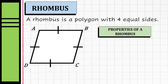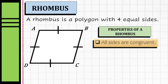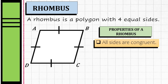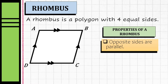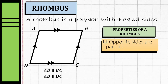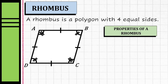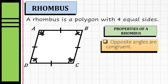Let's identify the properties of a rhombus. We know that all sides of a rhombus are congruent. Next, the opposite sides are parallel, so we can say that side AD is parallel to side DC, and side AB is parallel to side DC. Since opposite sides are parallel, we can also say that a rhombus is a parallelogram.